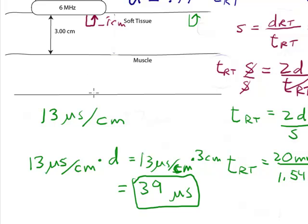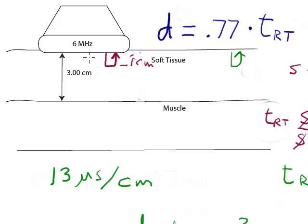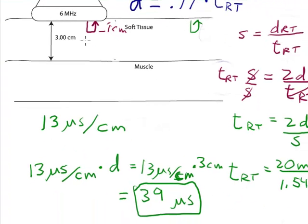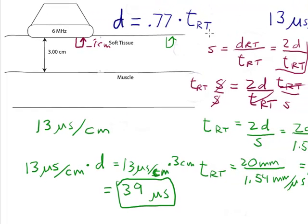That's equal to 39 microseconds. So the time I would expect it to take for reflection to return from this muscle tissue through the soft tissue, if this distance were 3 cm, would be 39 microseconds. So these are two handy rules that can be used to quickly calculate times and distances of an ultrasound pulse traveling in soft tissue.